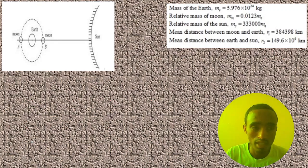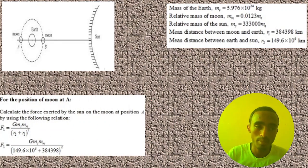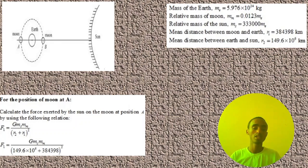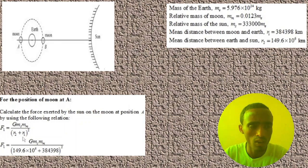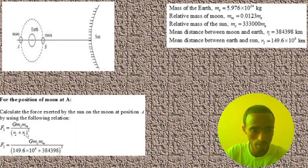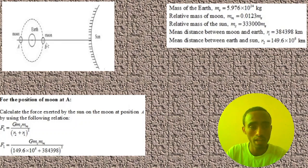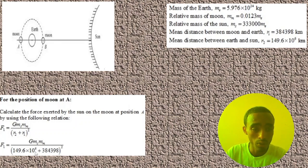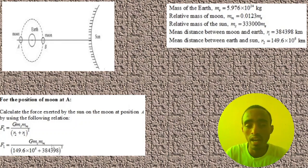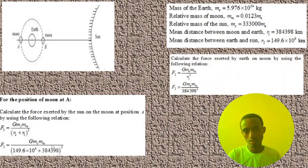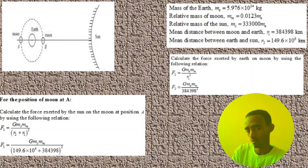You can calculate the force exerted by the sun on the moon and the force exerted by the earth on the moon using Newton's law of gravitation. At position A, force one is equal to the gravitational constant times the mass of the sun times the mass of the moon over (r1 plus r2), because the distance from the sun to the moon is r1 plus r2. We can simplify this — the gravitational constant and mass of the moon are known — and finally we get this value. Also, we can calculate the force exerted by the earth on the moon using: gravitational constant times mass of earth times mass of moon over r2. We substitute the values and we get this result.